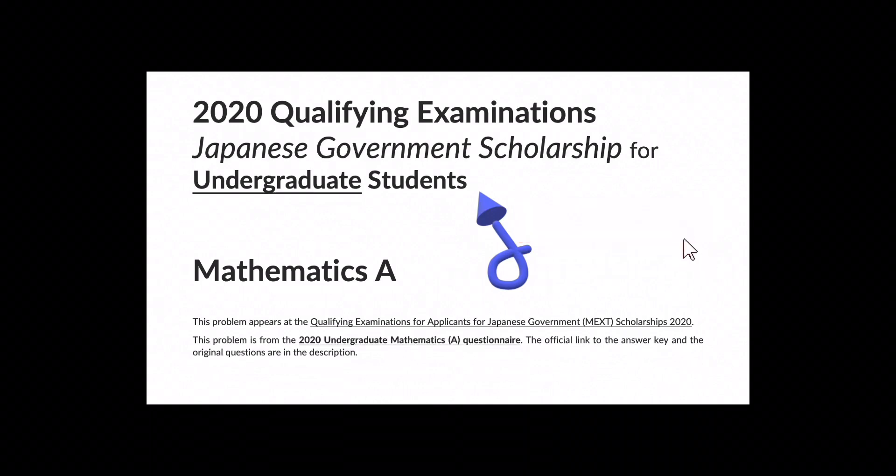J-HAT-JUKU. Please hit subscribe. This problem appears at the Qualifying Examinations for Applicants for Japanese Government MEXT Scholarships 2020. This problem is from the 2020 Undergraduate Mathematics A Questionnaire. The official link to the answer key and the original questions are in the description.